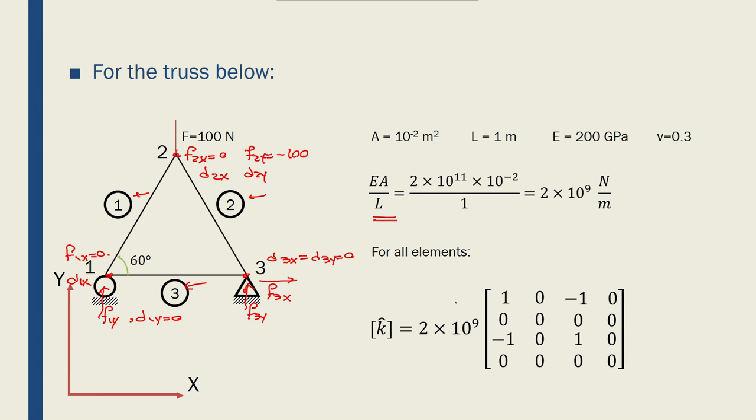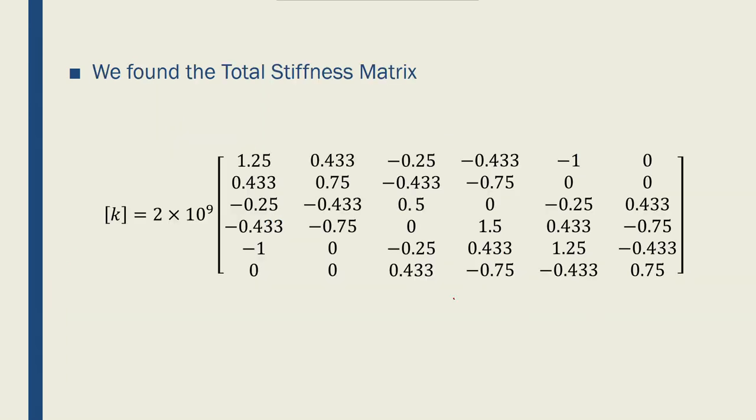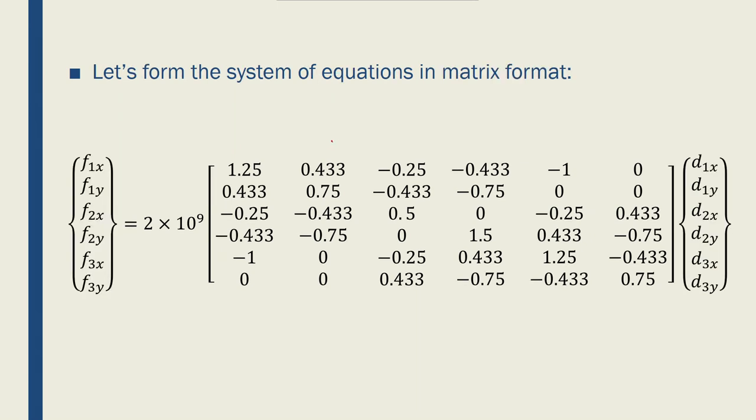The local stiffness matrix for a single truss element. And we found this total stiffness matrix for the entire structure of the truss that we found previously. So I can use this matrix to form the matrix formulation here. Here is the global nodal forces. And here is the global nodal displacements.